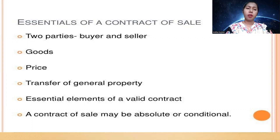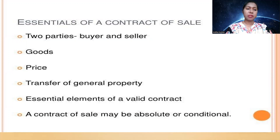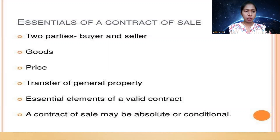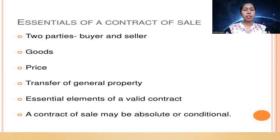Transfer of general property is also an essential element. It is not like bailment or pledge, where only possession is transferred without ownership. Under the Sale of Goods Act, once you pay the money, the ownership is immediately transferred to the buyer. For example, if you visit a shop and buy goods, once you pay, the seller hands over the product and the ownership is transferred immediately. All the essential elements of a valid contract must also be fulfilled under the Sale of Goods Act. The contract of sale may be absolute or conditional — absolute means without any conditions, and conditional means the goods carry some conditions before delivery.